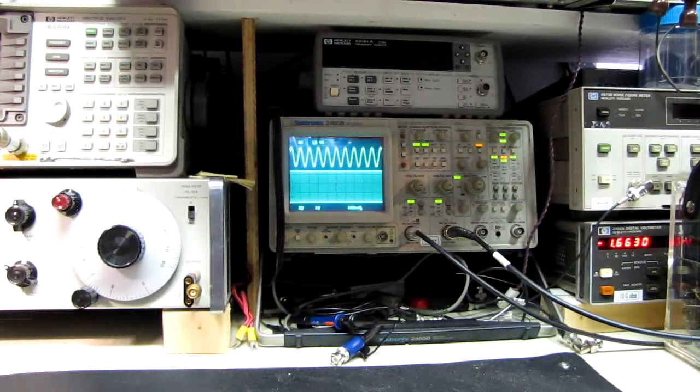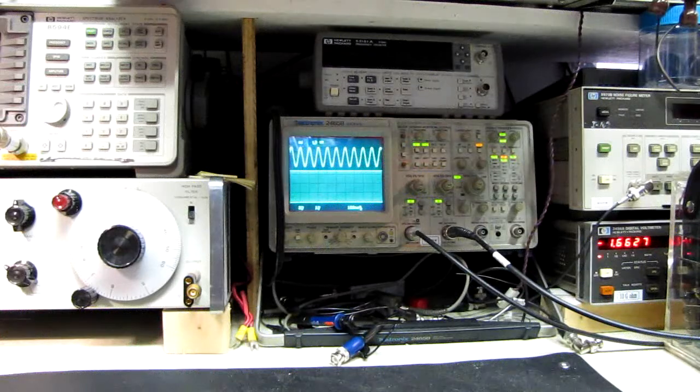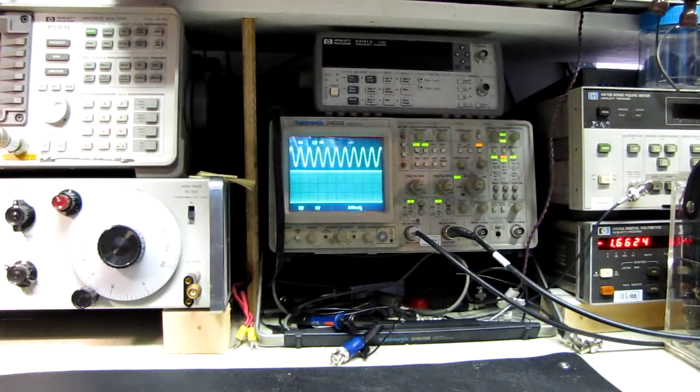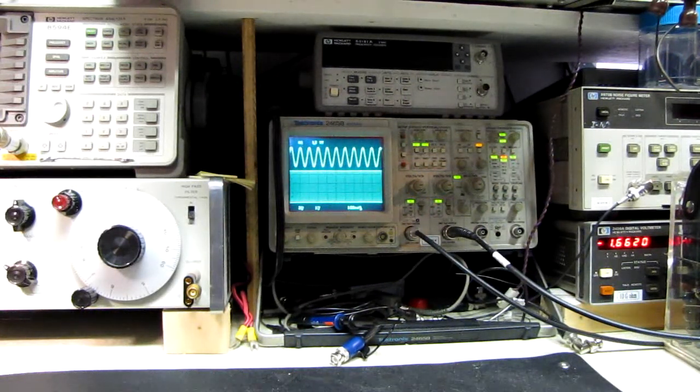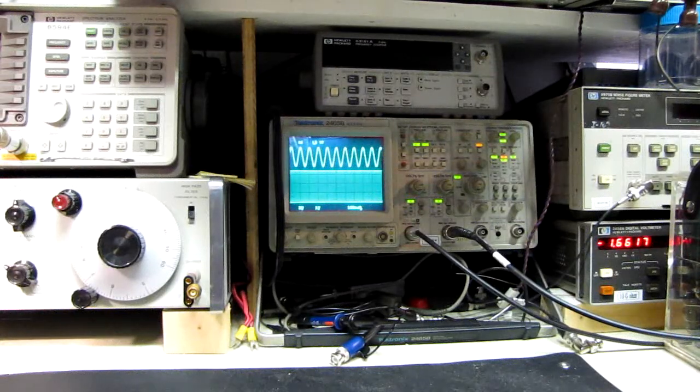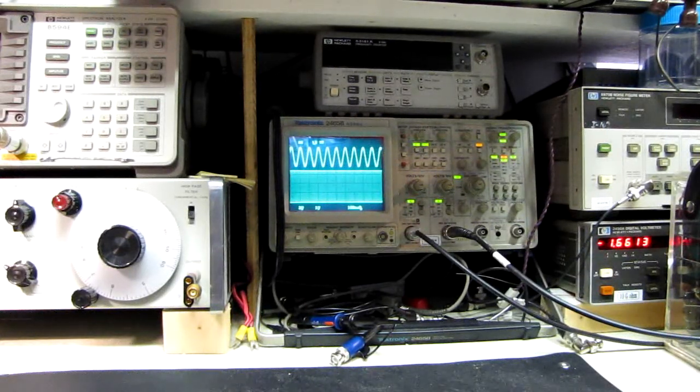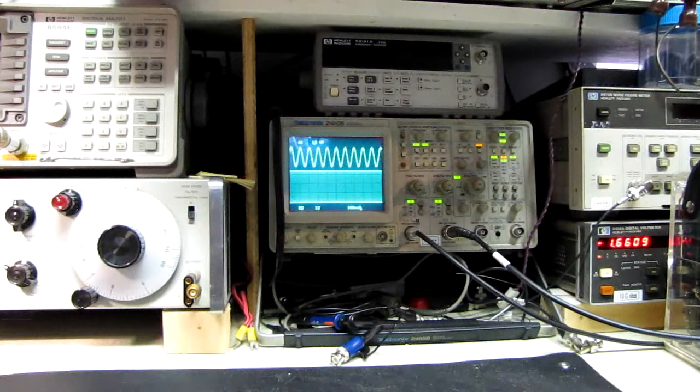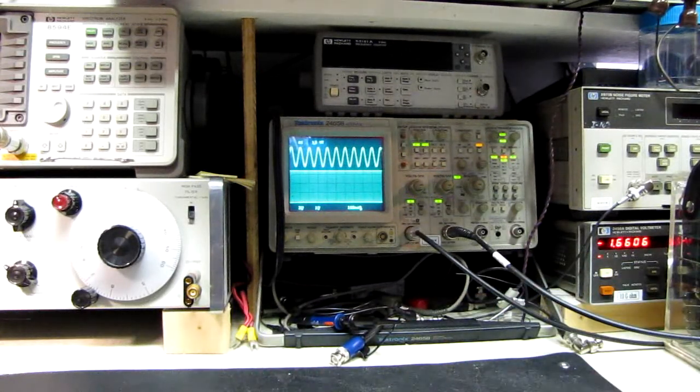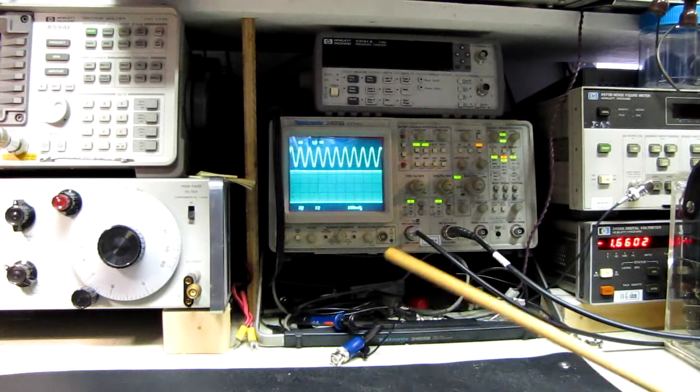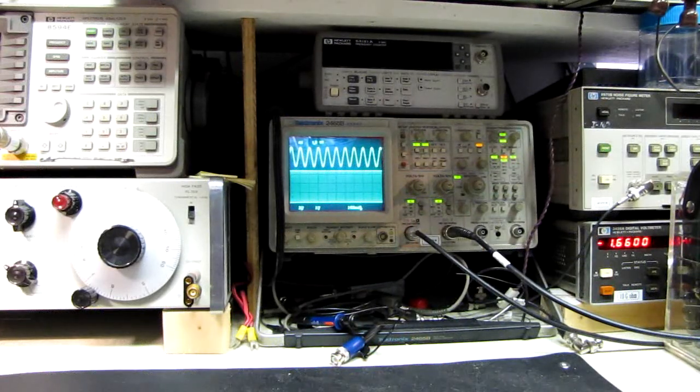Unless it's going to make a liar out of me, but it should be kicking on in a minute. Usually only takes it a couple of minutes to finally find its lock. Right now it's just shifting back and forth, back and forth. The automatic, the AFC, is trying to find that point where internally it will lock to the rubidium oscillator.